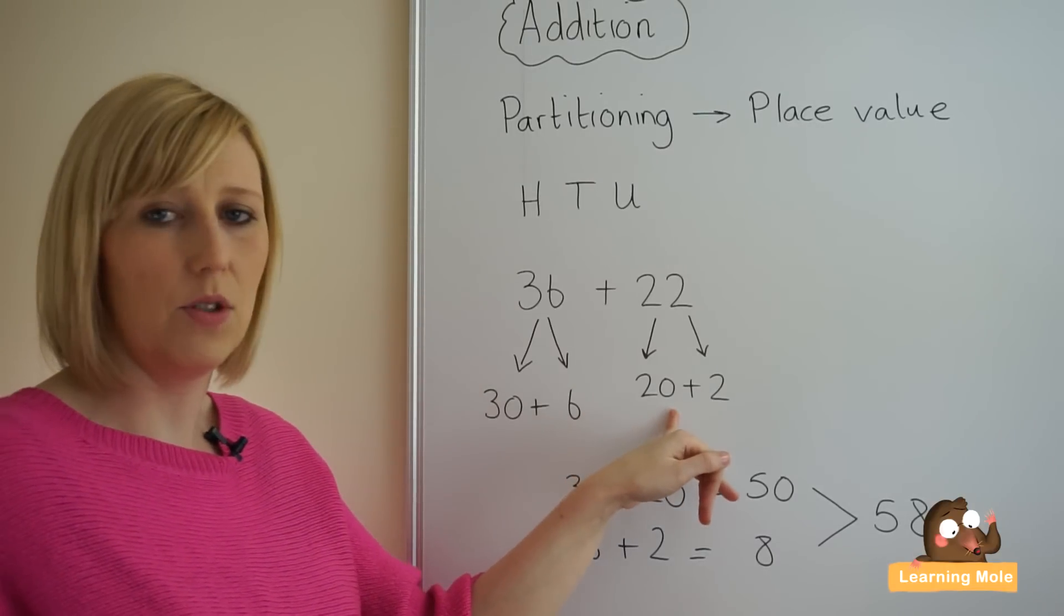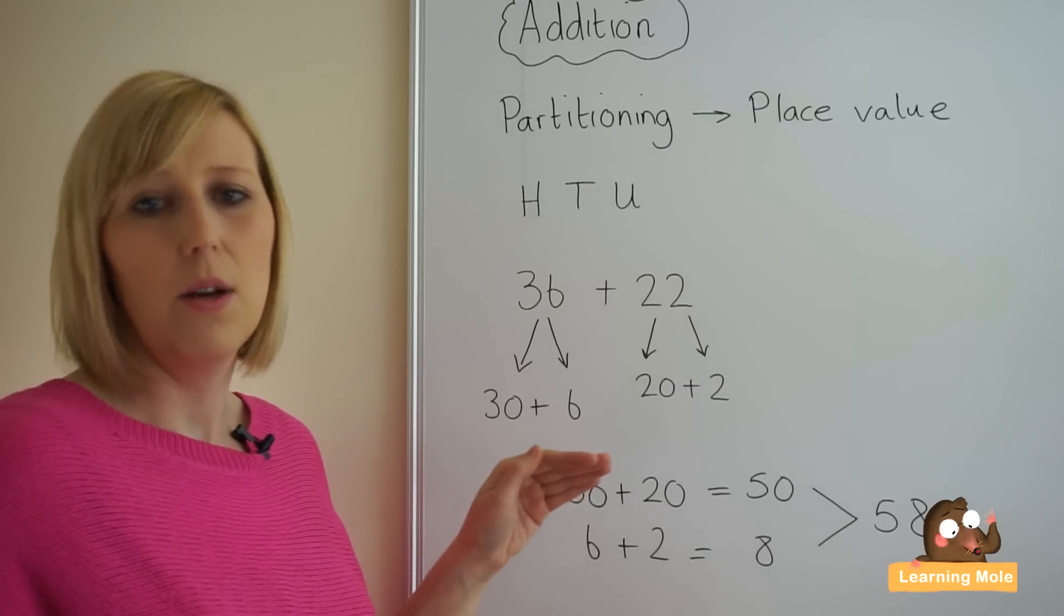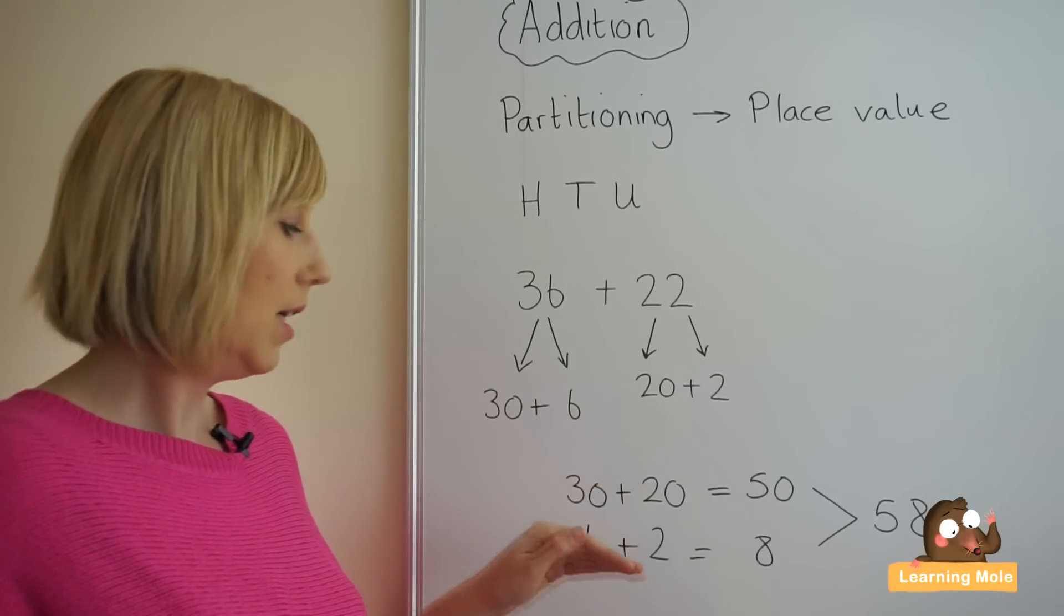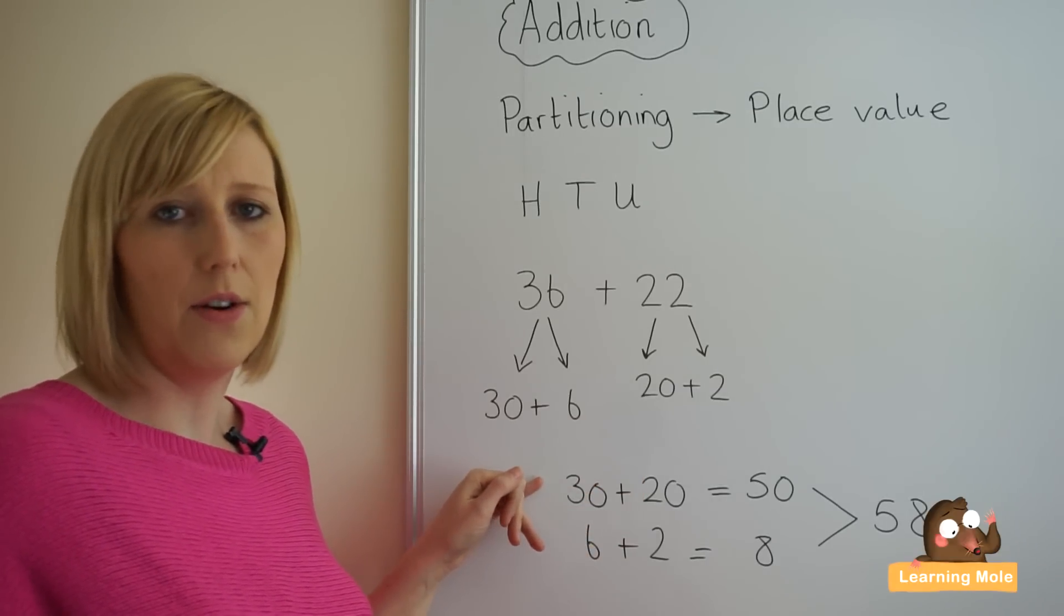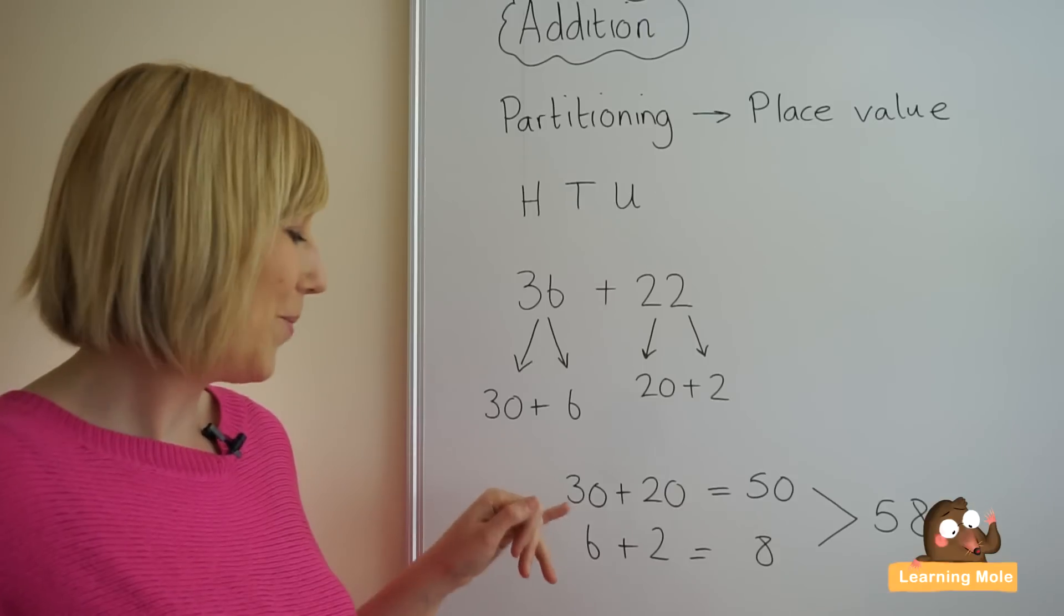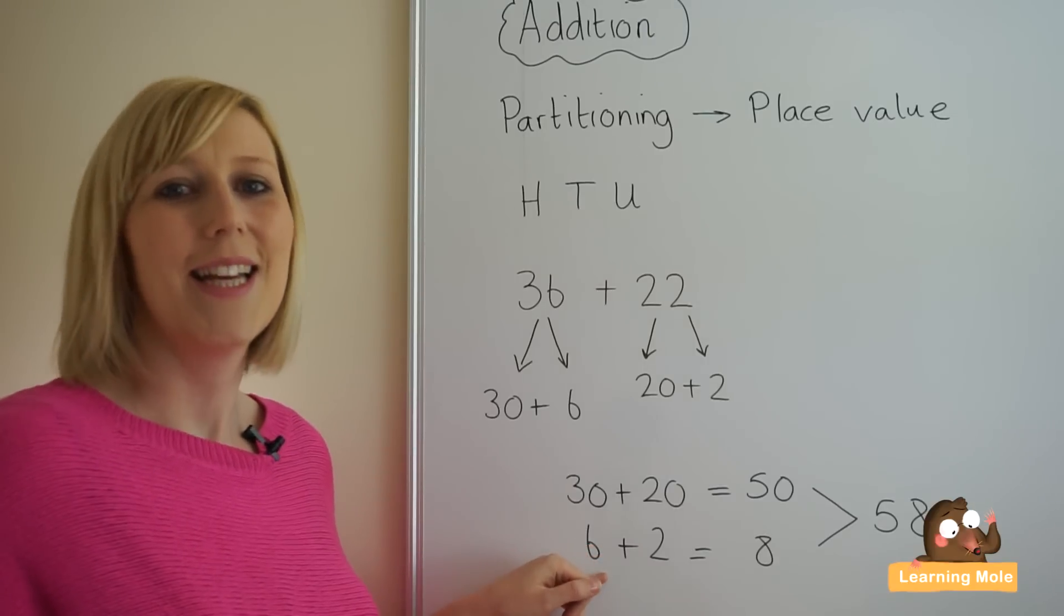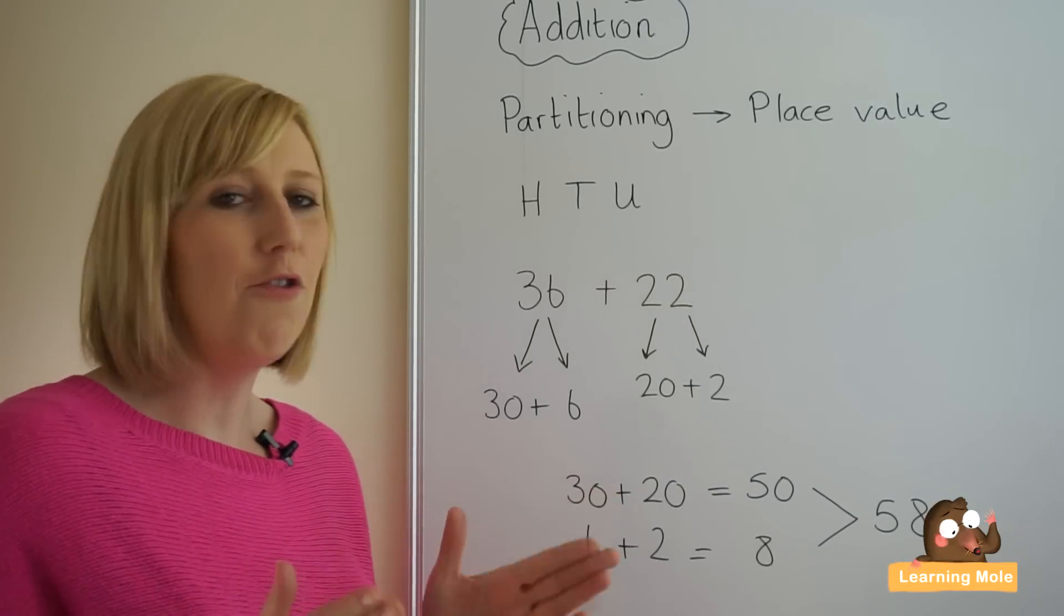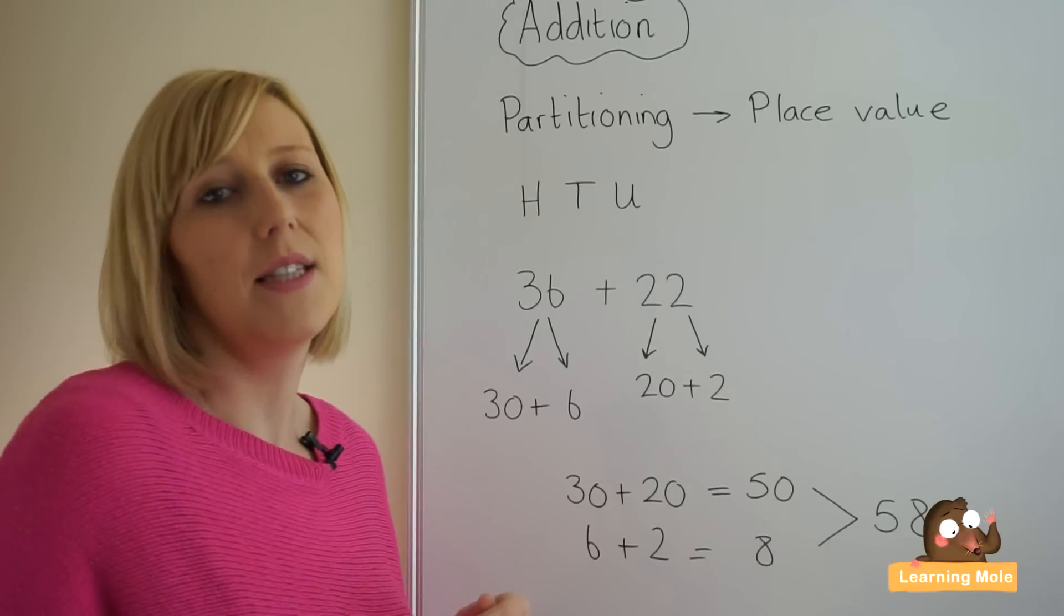Putting your tens numbers together, putting your units numbers together. Tens numbers together: 30 plus 20 is 50. Putting your units numbers together: 6 plus 2 is 8. And recombining.